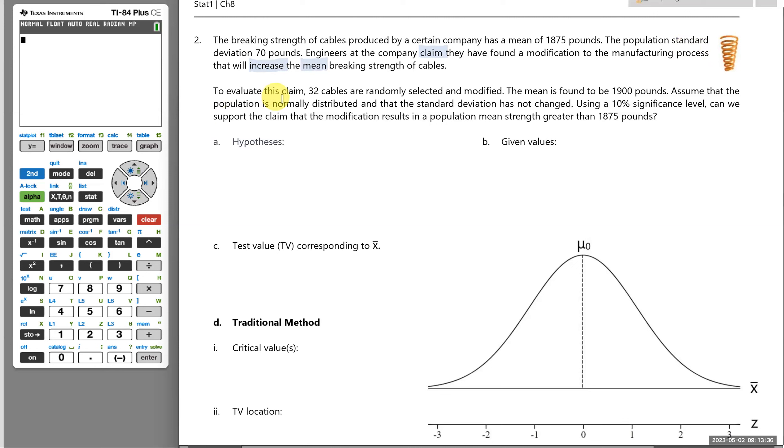So to evaluate the claim, they take 32 cables that are randomly selected and they modify them, and the mean breaking strength is found to be 1,900 pounds. Assume the population is normally distributed and that the standard deviation has not changed. So up top here, the population standard deviation was 70, so we'll assume that that is still the case. Using a 10% significance level, can we support the claim that the modification results in a mean breaking strength that is greater than 1,875 pounds?